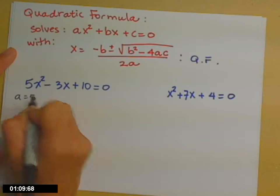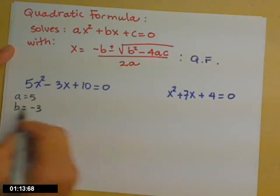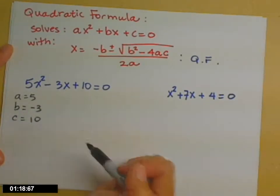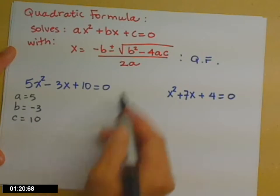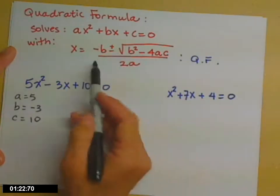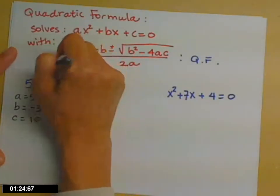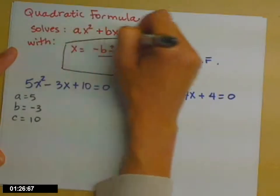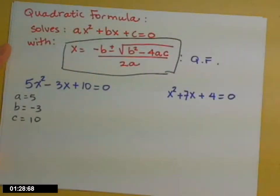So identify a, b—take the sign with b—and c. a is 5, b is negative 3, c is 10, and then we're plugging into the formula. So this is something you're going to need to have memorized. That quadratic formula is very important, and it doesn't go away.